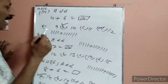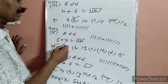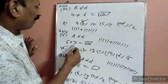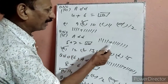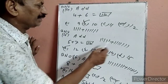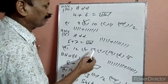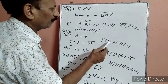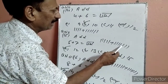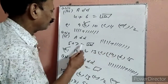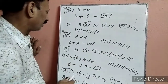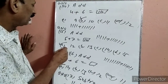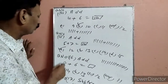Question 15: Add 5 plus 7. 5 line drop करेंगे, 7 line drop करेंगे, सब count करेंगे: 1, 2, 3, 4, 5, 6, 7, 8, 9, 10, 11, 12. 12 हो गया. 12 कहां पर है — A पर. A पर हमने टिक लगा दिया.